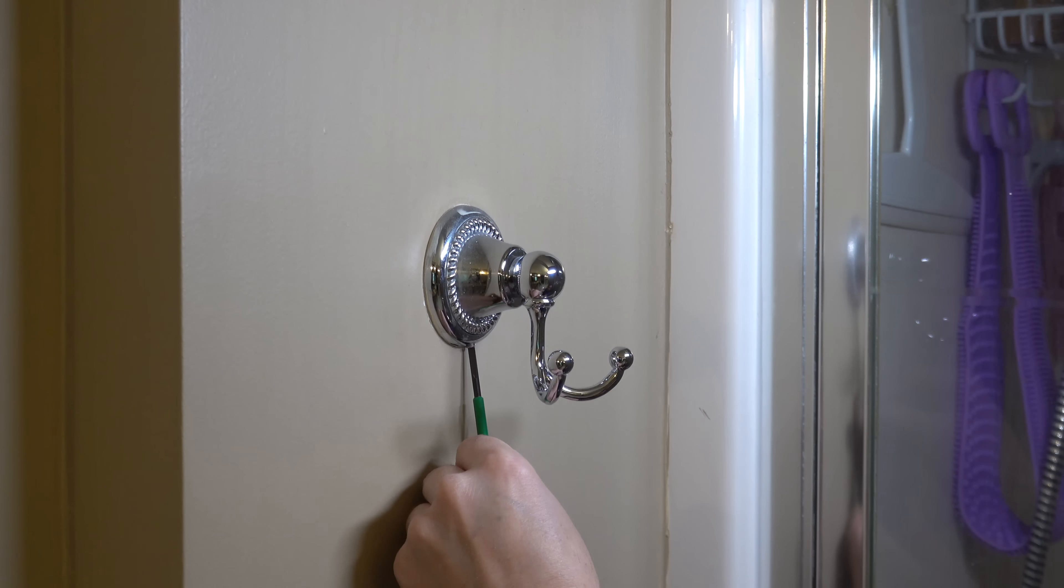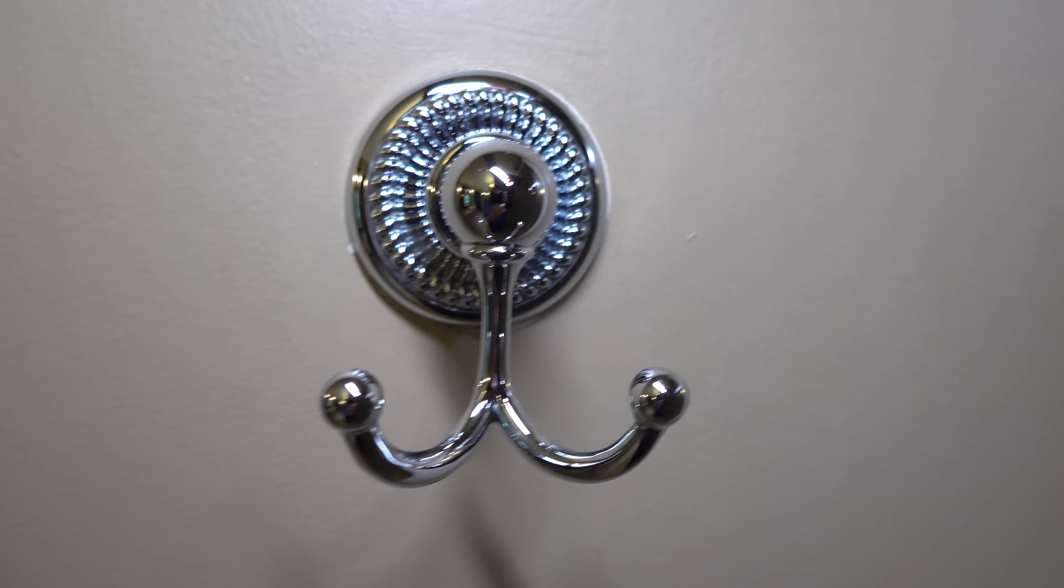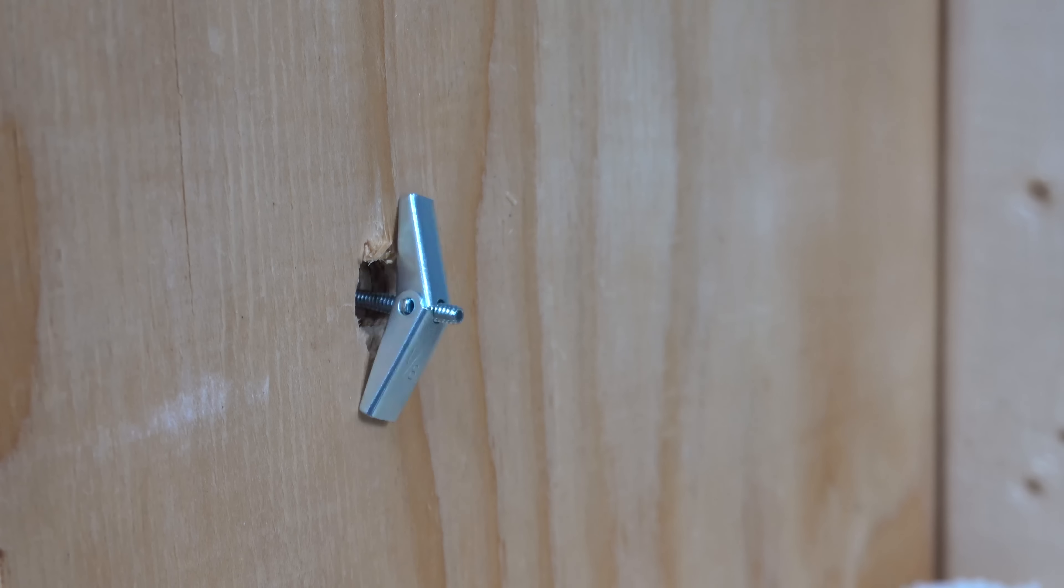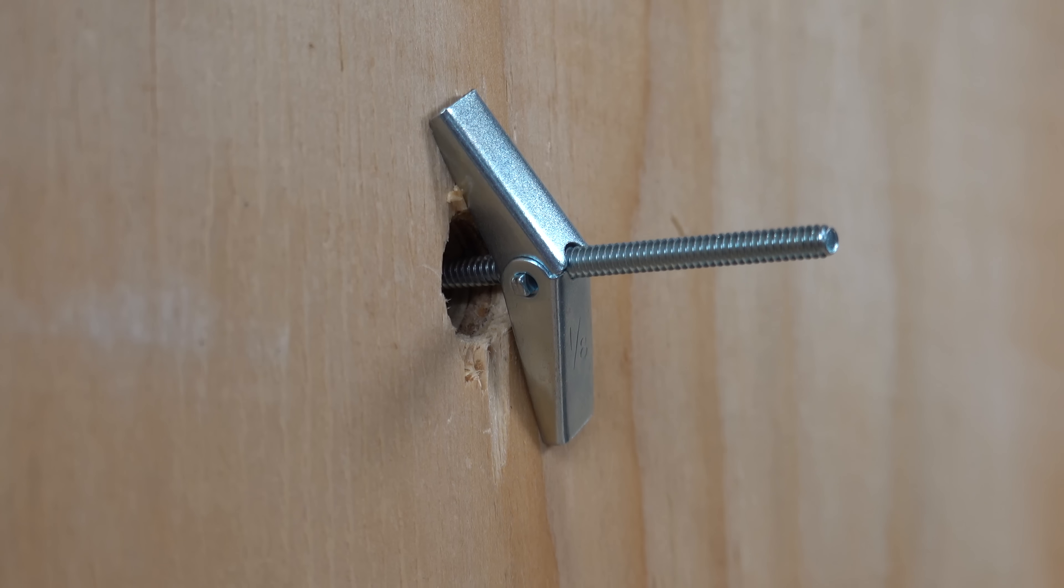Toggle bolts have been around a long time because they're cheap and they do a really great job. But some people are going to tell you that they don't work but that's mainly because they don't know how to use them. They don't put tension on them while they're tightening them down, they're going to spin inside the wall and then they're never going to make your bracket secure.